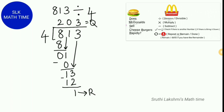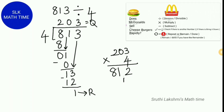To check our answer, we multiply the quotient and the divisor. Here the quotient is 203 and the divisor is 4. So we do 203 times 4, which gives us 812. But don't forget to add the remainder — the remainder is 1 — so 812 plus 1 gives us 813. So 813 divided by 4 is 203 remainder 1.